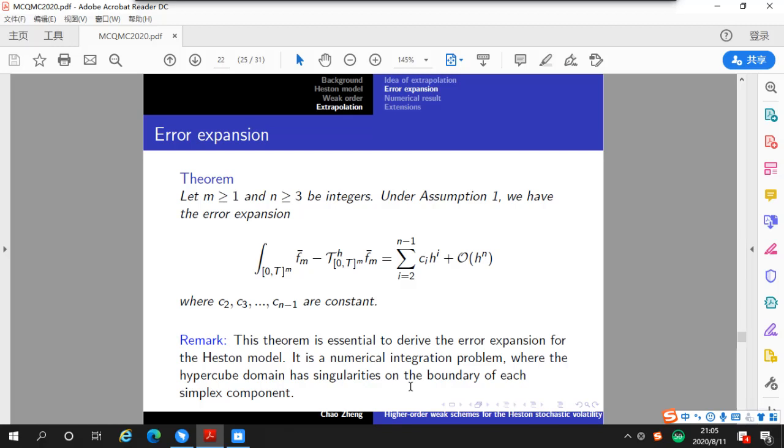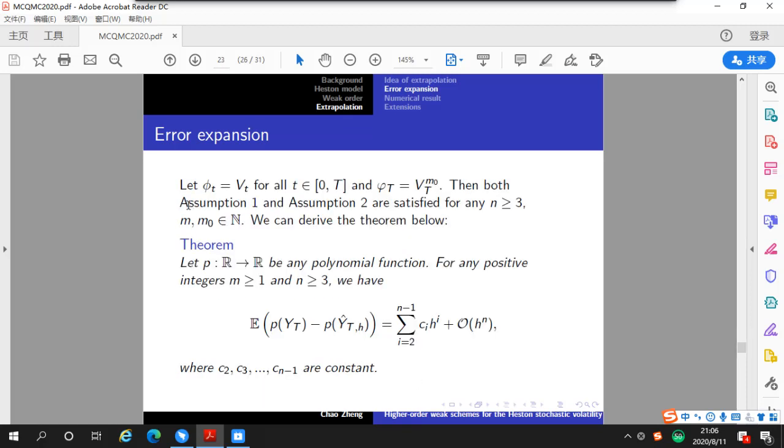Now, let's see how this theorem links to our error analysis of the Heston model. We let F_t equal to V_t, and Phi_t equal to this. Then both assumption 1 and assumption 2 are satisfied for the Heston model, and we can establish the theorem below. This theorem says that for payoff functions, polynomial payoff functions, the error can be expanded into arbitrary high powers of step size. So, with this result, one can easily apply extrapolation to construct a weak approximation of any desired order.